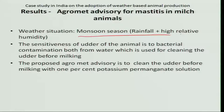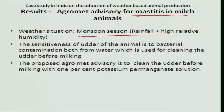Let us see some more case studies for the animal sector. In the same situation — monsoon, rainfall, and high relative humidity — the disease is mastitis, the infection of the udders of milch animals, especially cows. The udder gets contaminated with bacteria; this is a bacterial disease. The teats get blocked and no milk will come. This disease is very common during monsoon season and bacterial contamination is very aggressive during this season.